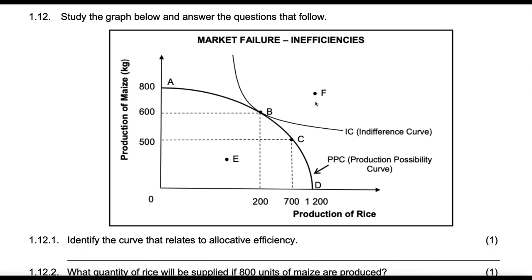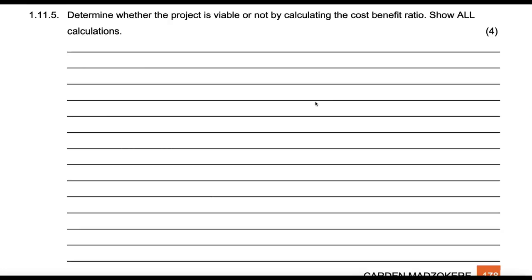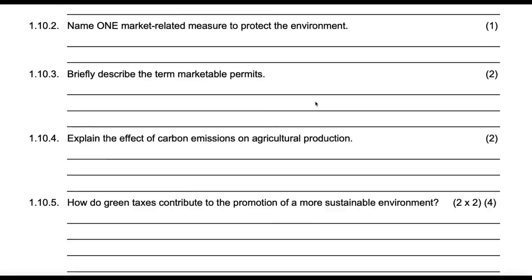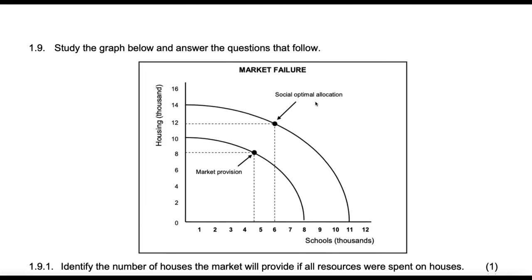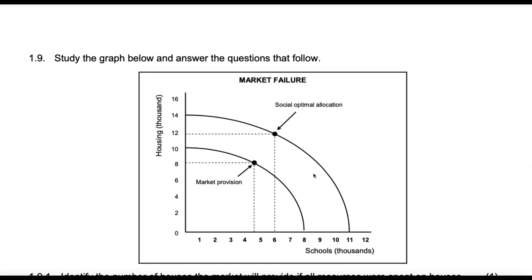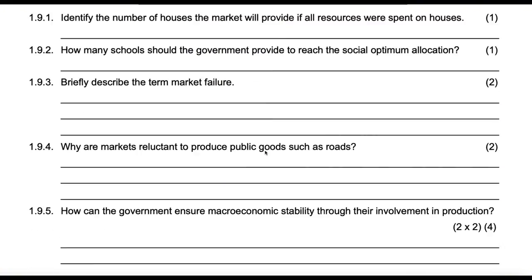Like we saw in the previous video, we have this PPC, then we had this outward shift, which would be caused by government intervention.